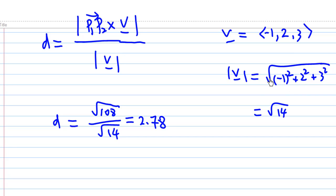Therefore, the distance between two lines is the magnitude of P1P2 cross V over the magnitude of V, which is square root of 108 over square root of 14, and this is approximately 2.78.